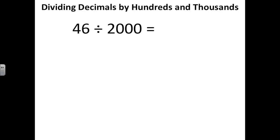Let's try another one. 46 divided by 2,000. Once again, I'm going to split 2,000 up into 2 and 1,000. 2 times 1,000 equals 2,000. So now I can solve it in two steps.